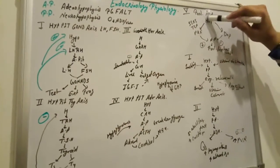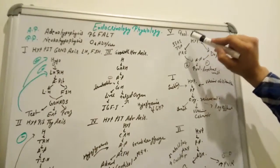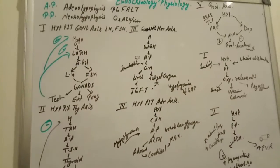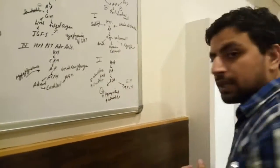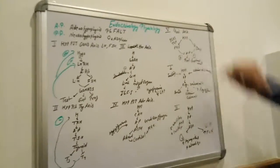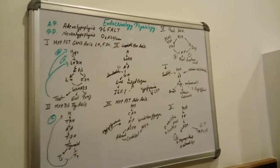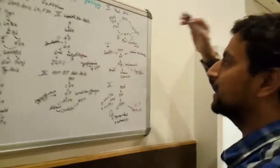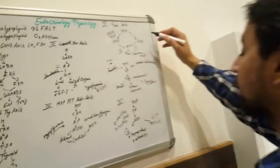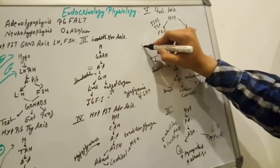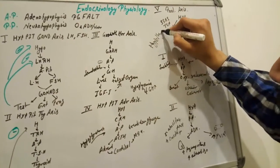The prolactin axis: Hypothalamus produces prolactin releasing factor. SSRI and TCA — tricyclic antidepressants — increase the prolactin releasing factor. The anterior pituitary then releases prolactin. Prolactin is responsible for producing milk. Dopamine acts as an inhibitor for prolactin. Dopamine increases in schizophrenia, and in that condition we use antipsychotics. Antipsychotics increase prolactin level by decreasing dopamine. Dopamine antagonists are antipsychotics, and dopamine agonists inhibit prolactin. Prolactin also increases in hypothyroidism.